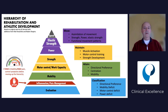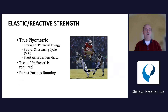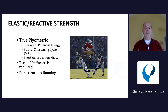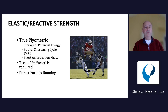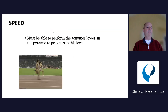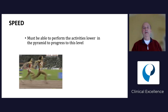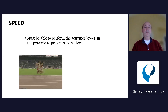Next we go into elastic strength, which gets into what we call plyometrics. It uses the stretch shortening cycle and the ability of the body to be elastic - the springiness. Stiffness is required and it's the purest form of learning. But it needs all the other criteria below it. A common error is trying to do plyometrics too early when people don't have good range of motion, strength, or power. Lastly is speed - a component we probably won't reach in rehab, but some people build their entire career around training speed.